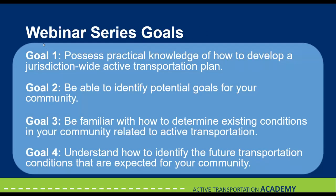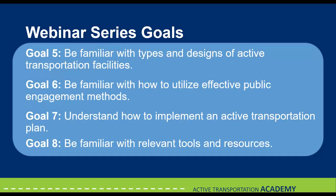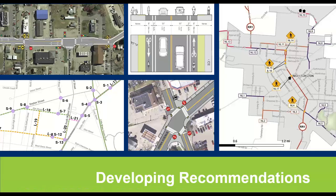Just going to briefly run through our webinar series goals. Goal one: possess practical knowledge of how to develop a jurisdiction-wide active transportation plan. Goal two: be able to identify potential goals for your community. Goal three: be familiar with how to determine existing conditions in your community related to active transportation. Goal four: understand how to identify future transportation conditions expected for your community. Julie went over all of these items yesterday. Today, we'll be covering goals five and six. Tomorrow, Katherine will cover tools and resources that ODOT has developed, and we're also developing an active transportation plan template that local communities can use to develop their own plans.